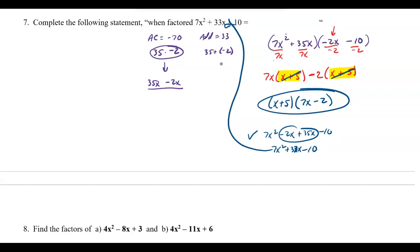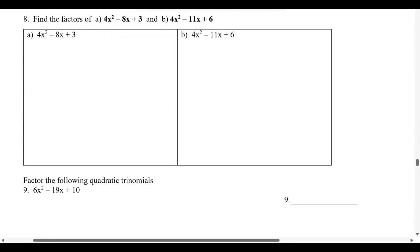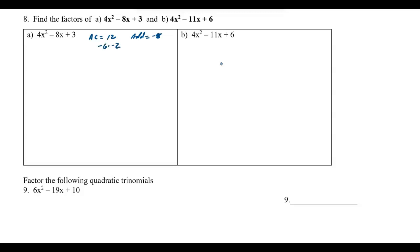Now let's look at the next example. When the leading coefficient is not prime, guess-and-check becomes harder, so the AC method is better. Here AC equals 4 times 3, which is 12, and I need factors that add to negative 8. Since the product is positive and the sum is negative, both factors are negative: negative 6 times negative 2 gives positive 12, and negative 6 plus negative 2 gives negative 8. I'll split the middle term into negative 6x minus 2x.